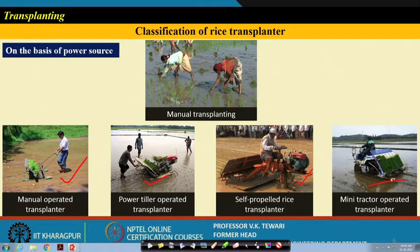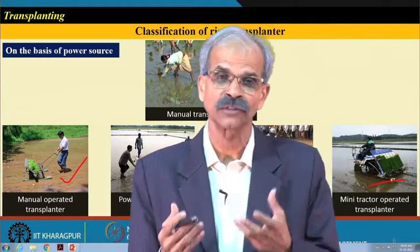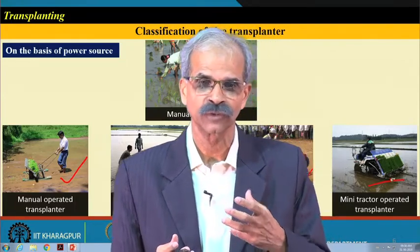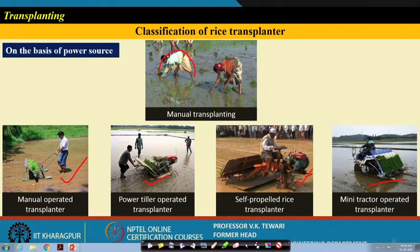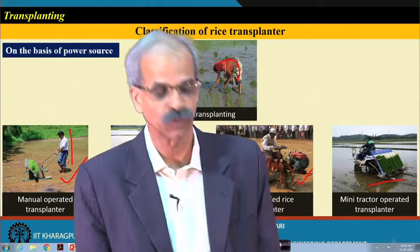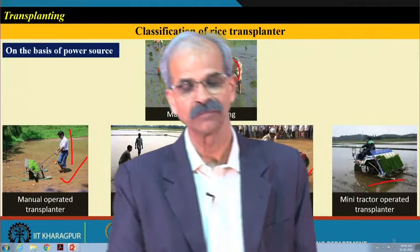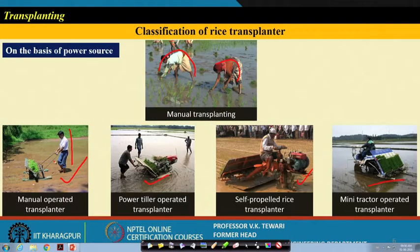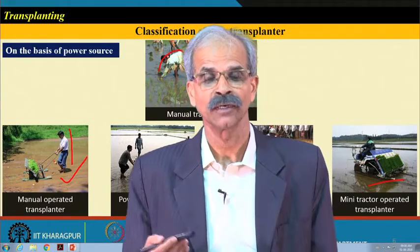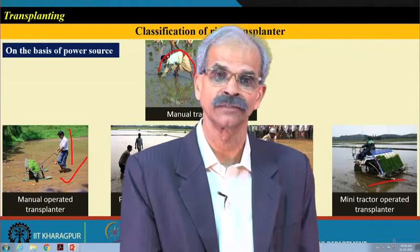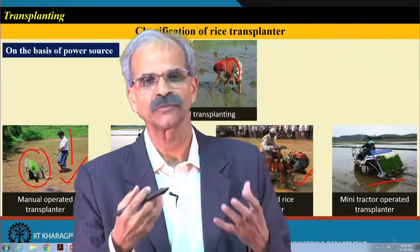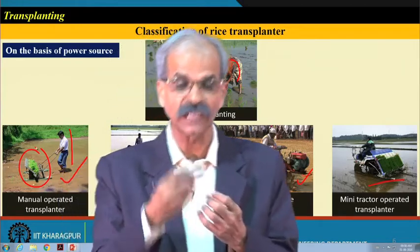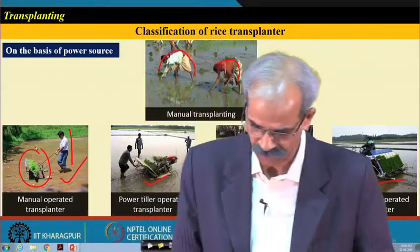If you want to make any changes, there are many locations where you can apply design aspects and improve things. For example, the ladies maintain a bent posture, so from an ergonomics point of view a standing posture is better. This particular device is pulled in the backward direction, so another aspect is whether going in the forward direction gives a better result. We also need to think about the rate at which seedlings are picked up and the mechanisms of picking seedlings from the mat.